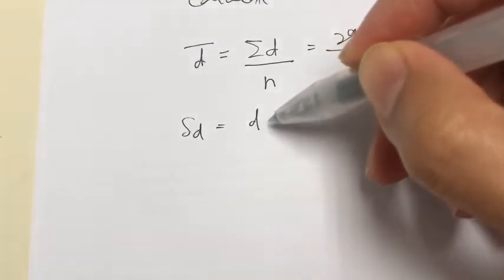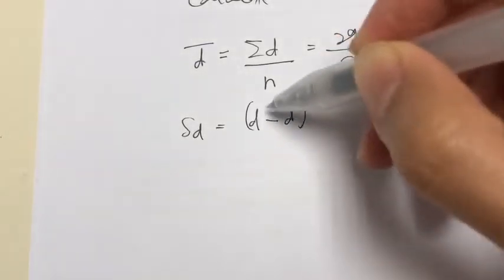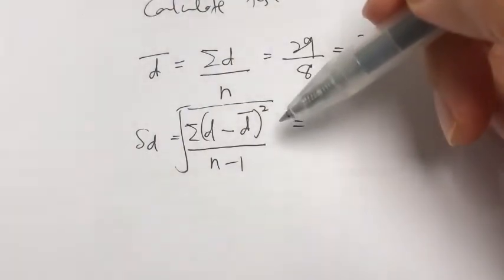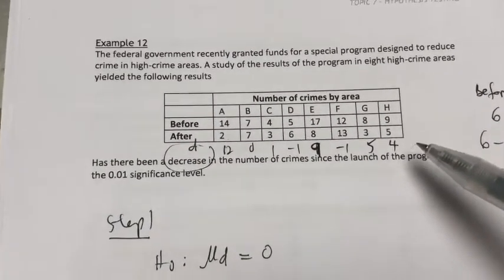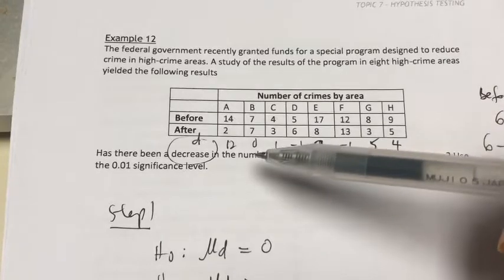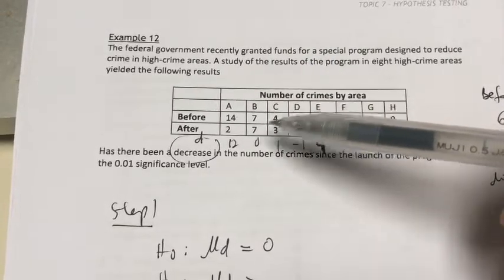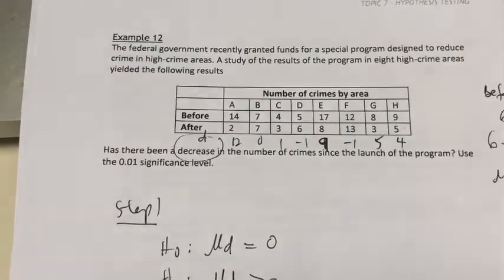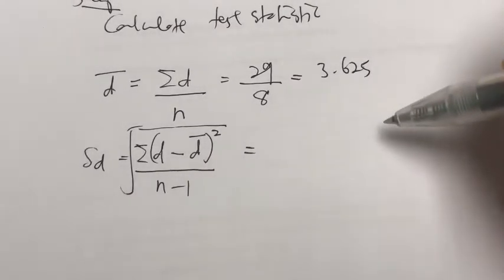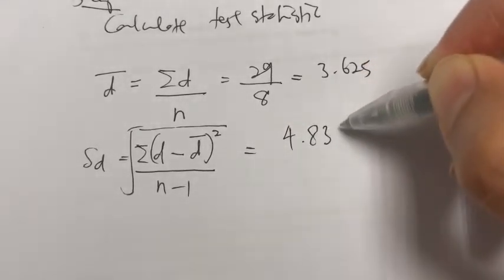Once we have the mean difference, we find the standard deviation of the distribution of differences. For each individual difference, compute D minus D-bar (which is 3.625), square it, sum them all together, and divide by n minus 1. Then take the square root to get the standard deviation. For instance, 12 minus 3.625 squared, plus the next term, and so forth. The total standard deviation of the differences works out to S_D = 4.8385.